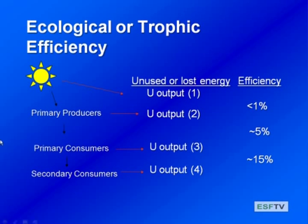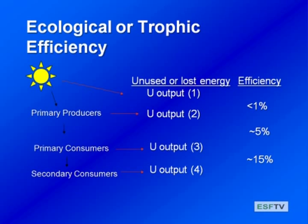We can summarize: energy is transferred between trophic levels, and we can think about the transfer efficiency at each link. Less than one percent of solar energy is actually used to drive primary production. Then only about five percent of primary producer material is utilized by consumers. About 15 percent of energy is transferred from primary consumers to secondary consumers. You may have learned in basic ecology that on average every trophic level gets about 10 percent transfer efficiency between links.